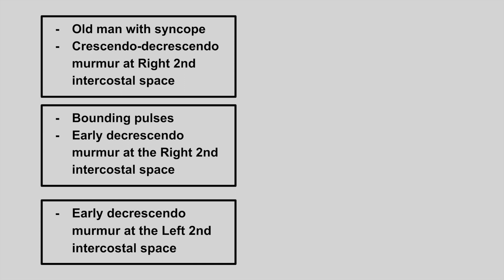The next one is an old man with syncope and a crescendo-decrescendo murmur at the right second intercostal space. This is aortic stenosis.